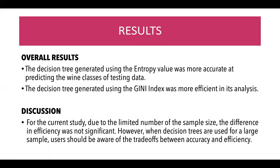The overall results show that the decision tree generated using the entropy value was more accurate at predicting the wine classes of the testing data, and the decision tree generated using the Gini index was more efficient in its analysis, meaning that it took less time.